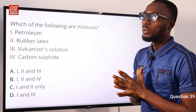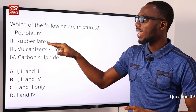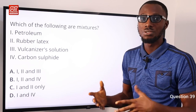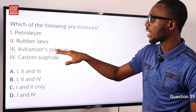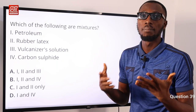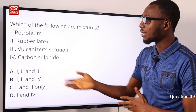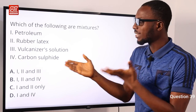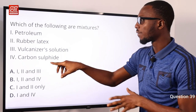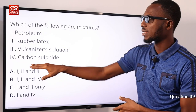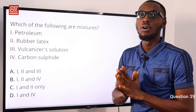Question 39. Which of the following are mixtures? Petroleum is a mixture of hydrocarbons. Rubber latex is a milky sticky liquid from rubber trees — a mixture. Vulcanizer solution is a mixture of rubber dissolved in benzene and sulfur. Carbon disulfide, however, is a compound — the only compound here. So petroleum, rubber latex, and vulcanizer solution are all mixtures. The option that carries items 1, 2, and 3 is option A, which is correct.